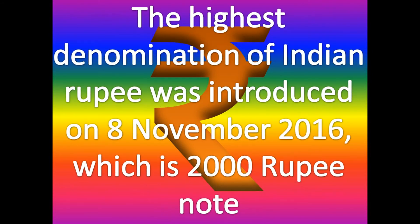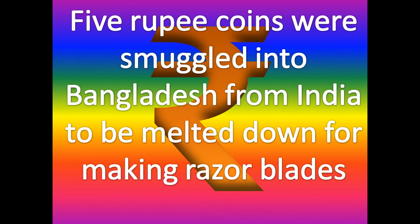After demonetization on 8th November 2016, the highest available denomination for the Indian rupee note is 2000. Five rupee coins were smuggled into Bangladesh from India to be melted down for making razor blades, as one five rupee coin was enough to make six razor blades, and each blade sold for rupee two.